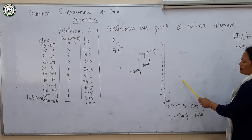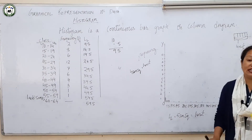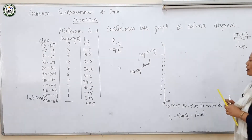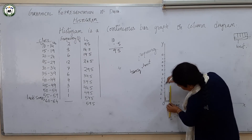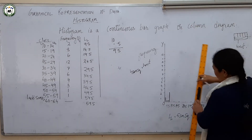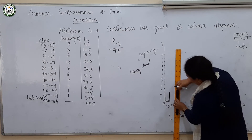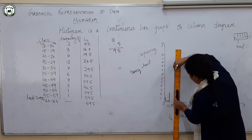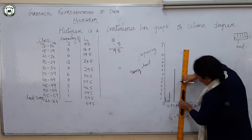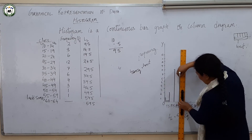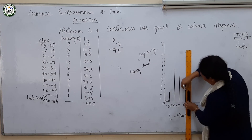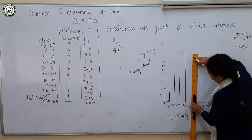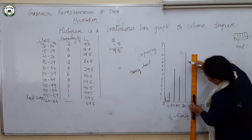We have already plotted all these points. Now what we need to do is we need to join all those lines. We will be joining all these lines — at 14.5 we have 8, so we join this line, since this line is forming a bar graph. Next, 19.5 with its frequency, then 24.5 with frequency 12, 29.5 — draw a straight line connecting your point with the class interval.